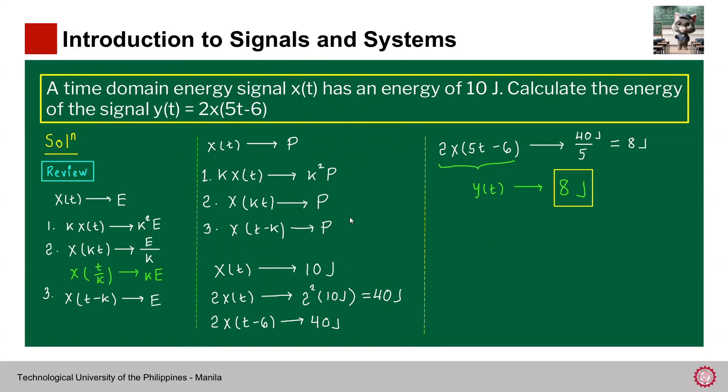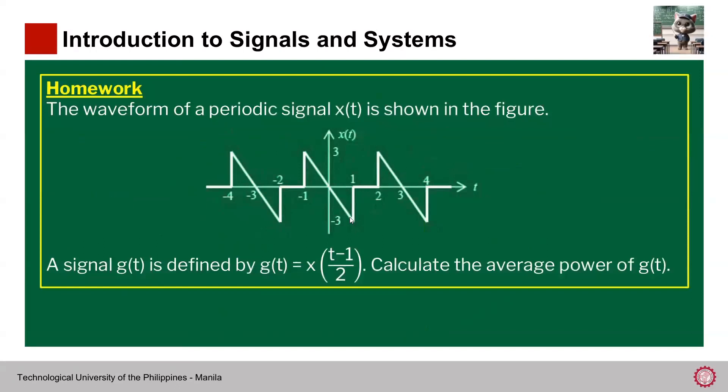Now, for your part, this is the homework question. The waveform of a periodic signal x(t) is shown in the figure. So that is the figure. A signal g(t) is defined by g(t) = x((t-1)/2). Calculate the average power of g(t). So for your answer, just comment it. And see you in the next video. Bye!